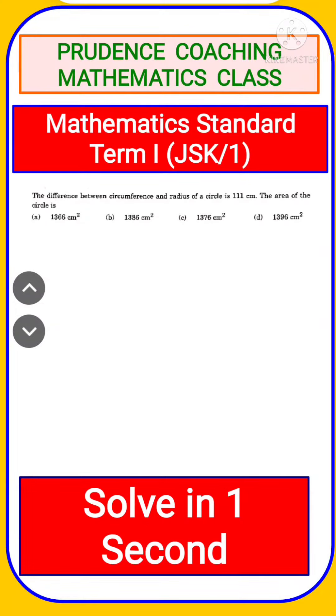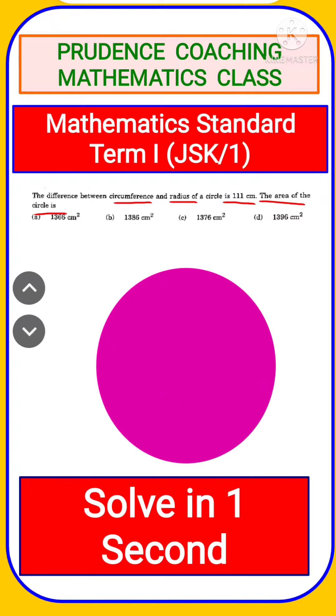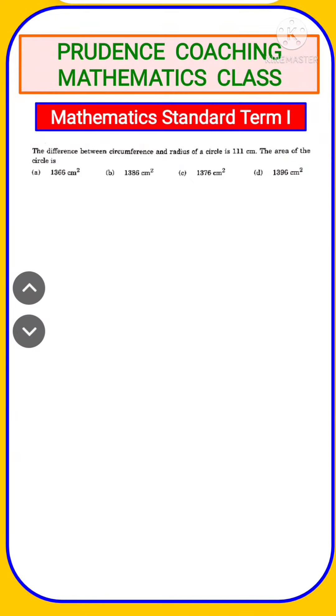Let's start with problem number 33. Here given, the difference between circumference and the radius of a circle is 111 cm. You are asked to find out the area of that particular circle. We know that the formula of circumference of the circle is 2πr.